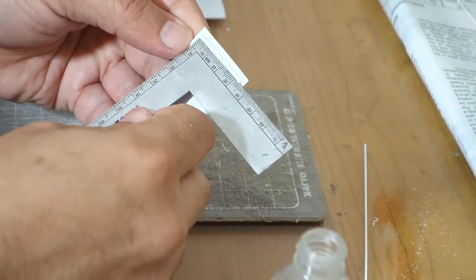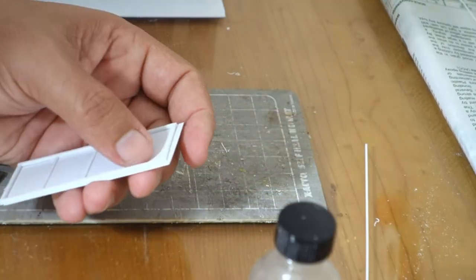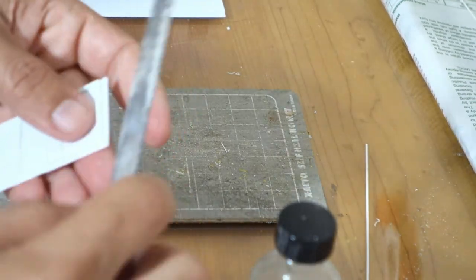Before I do any final cuts I'm going to make sure that all the angles are square here, and then I'm going to do some fine work and glue everything rock solid using CA.